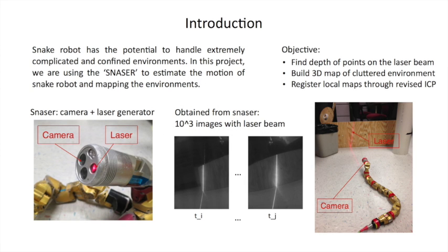All the snake robots in our bi-robotics lab are remotely controlled by humans. Our project should serve as the first step to implement future autonomous behavior using state estimation by visual odometry. This laser sensor is composed of a camera and a laser generator, which can generate thousands of images with laser beam in a single scan. Our project contains finding depth of each point on the laser beam, building a three-dimensional map of cluttered environment, and registering local maps through a revised ICP method.